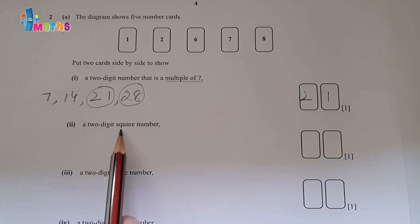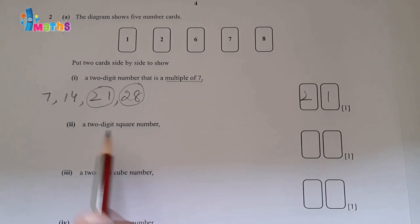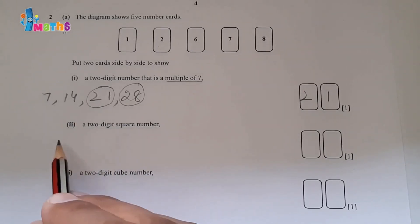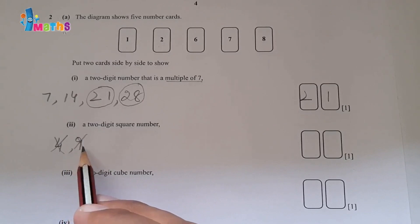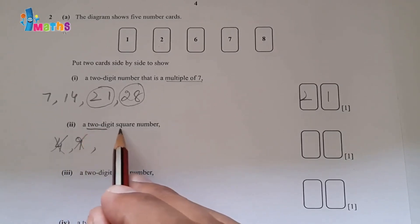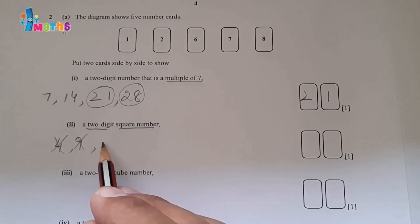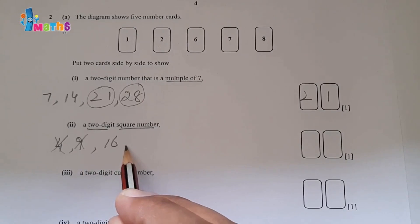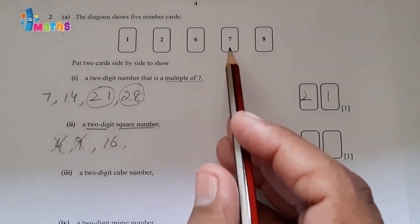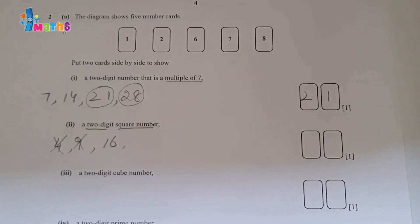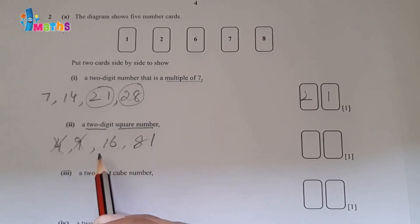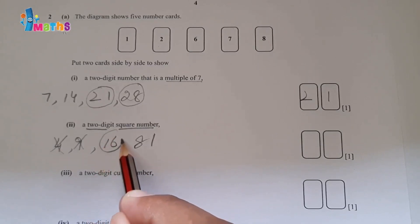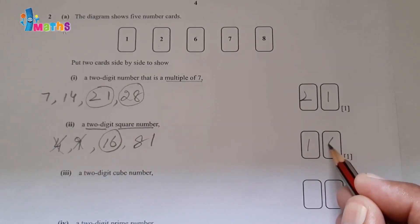Second part: a two-digit square number. One-digit square numbers are 4 and 9, but we need two digits. Two-digit square numbers include 16, 49, and 81. For 49 we would need two 7 cards, so we can write 81. One acceptable answer is 16.